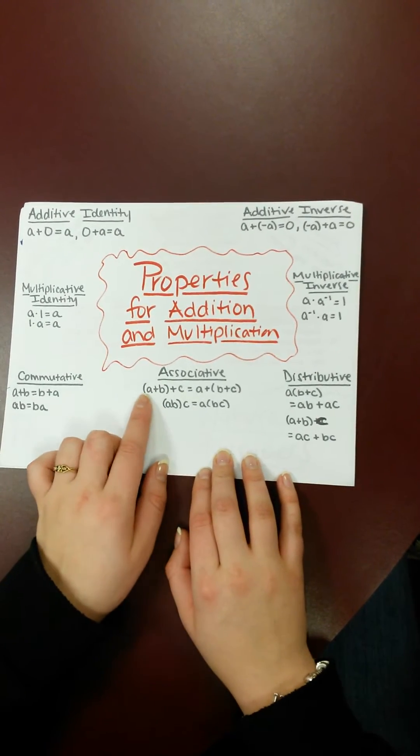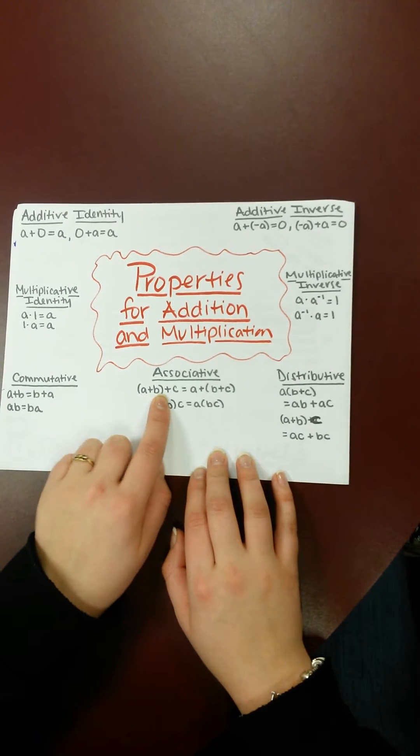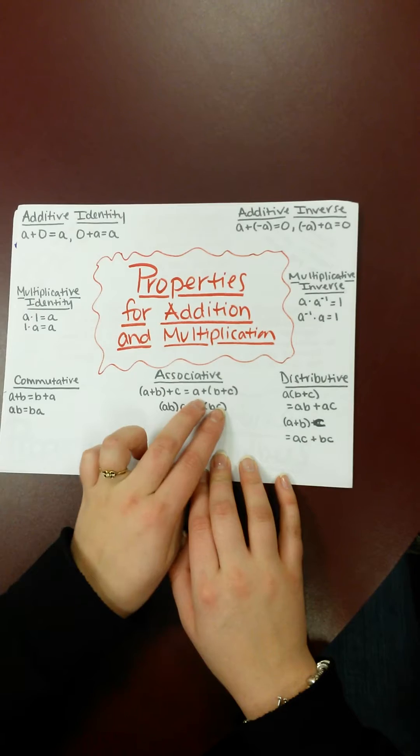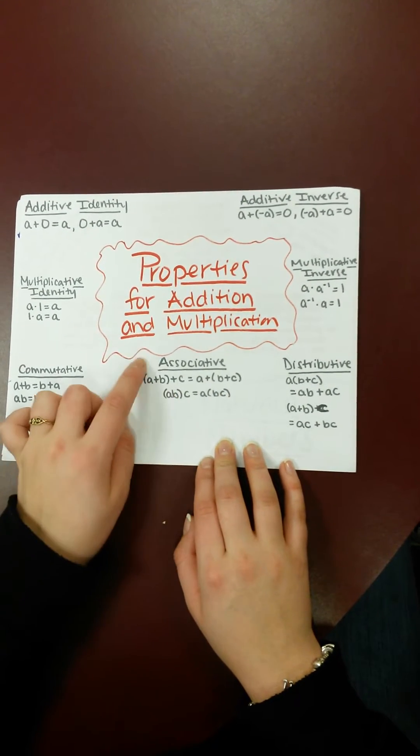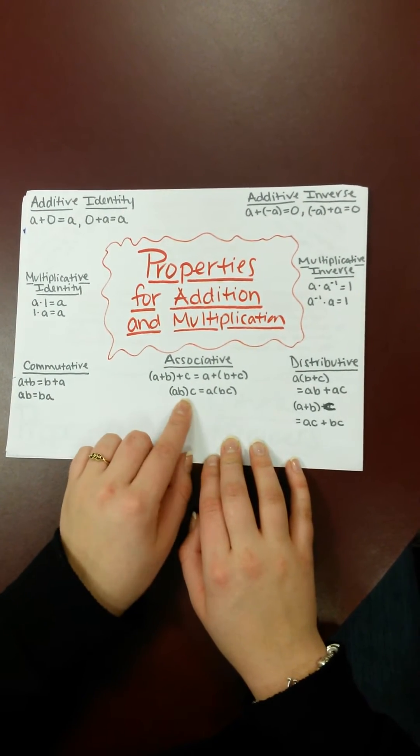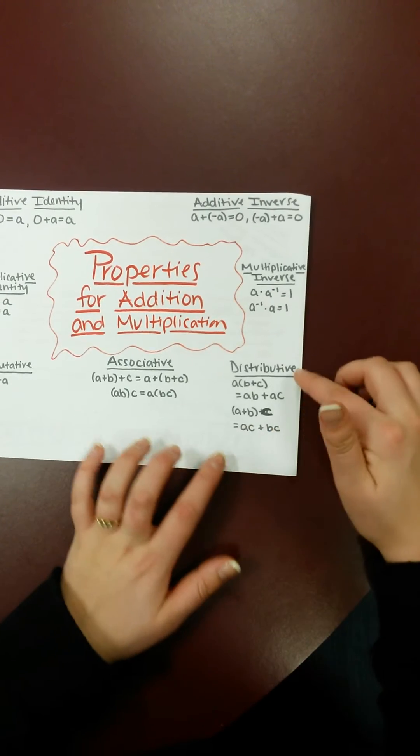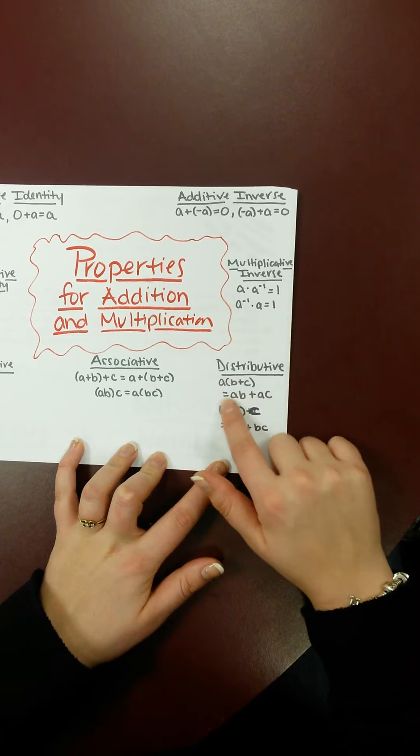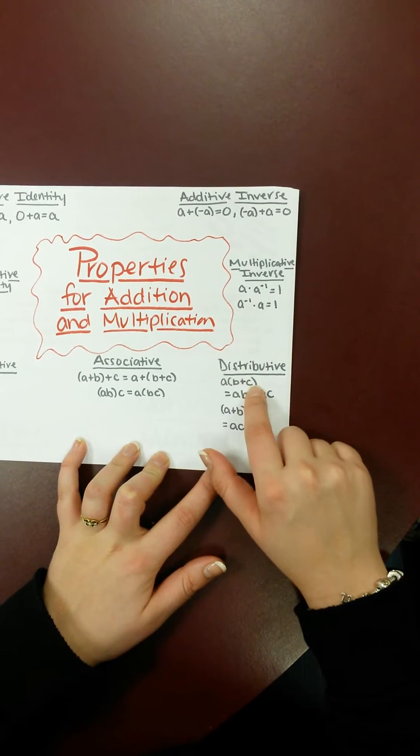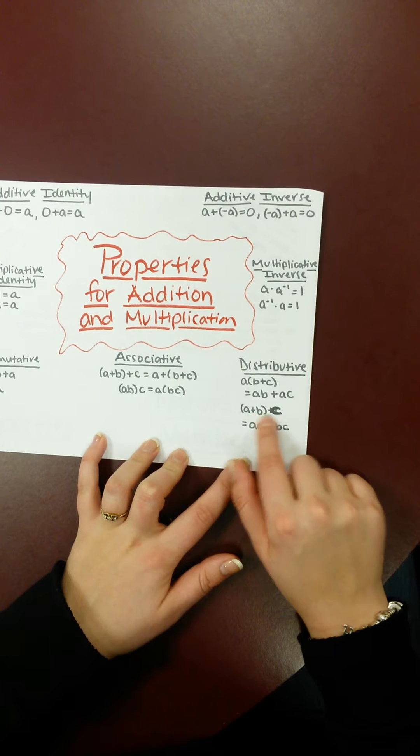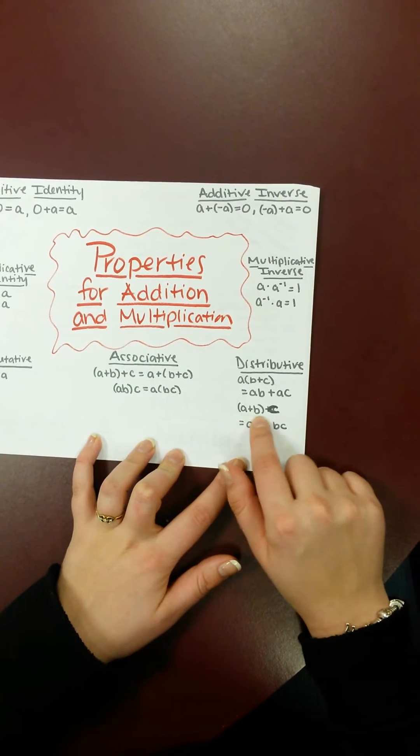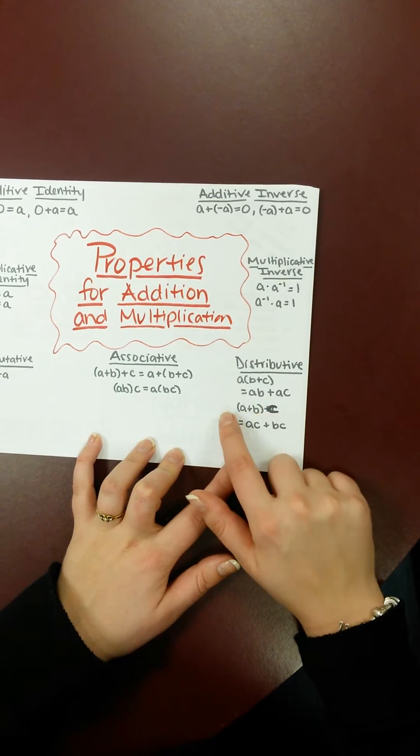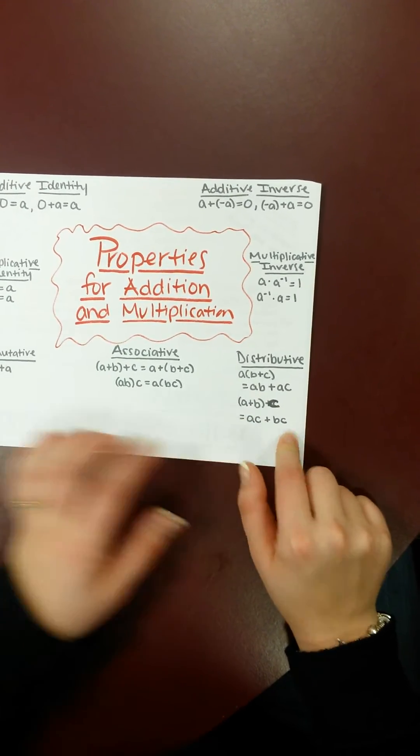Associative is whenever you say a plus b plus c is equal to a plus b plus c, and you just move the parentheses. If you can move the parentheses and still get the same thing, then it is associative. Same thing for multiplication. And distributive is whenever you have a times parenthesis b plus c is equal to ab, ac. So basically you just distribute to each factor. Same thing here. If a plus b in parenthesis times c, then you can times them and get ac and bc.